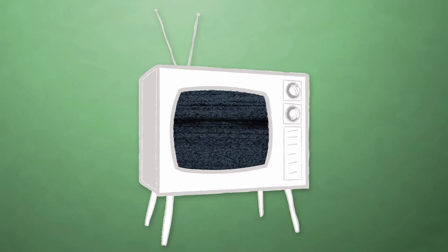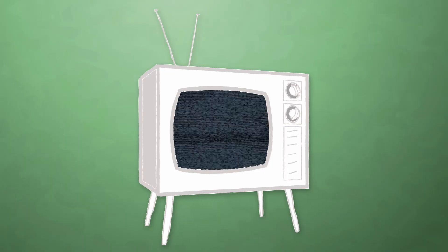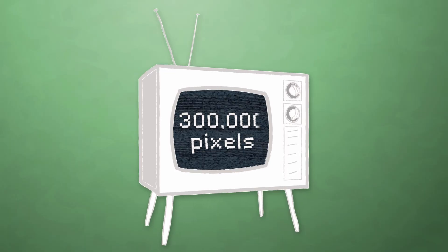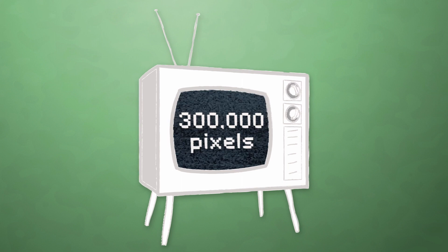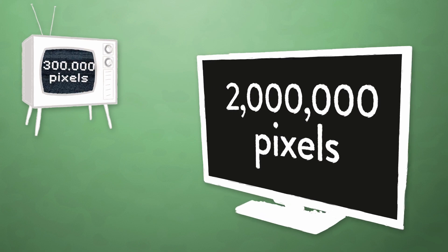Before we get to all that weird stuff that asterisk represents, we need to understand resolution itself. Resolution starts with the pixel. A pixel is the smallest possible unit of a digital image, a single point of light. When you hear manufacturers talking about resolution, they're describing the number of pixels on a given screen. So an old-school cathode ray TV would display the equivalent of 300,000 pixels on the screen, while an HDTV could pack more than two million pixels into the frame.